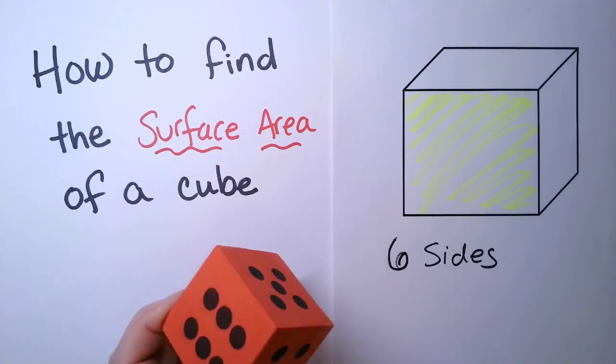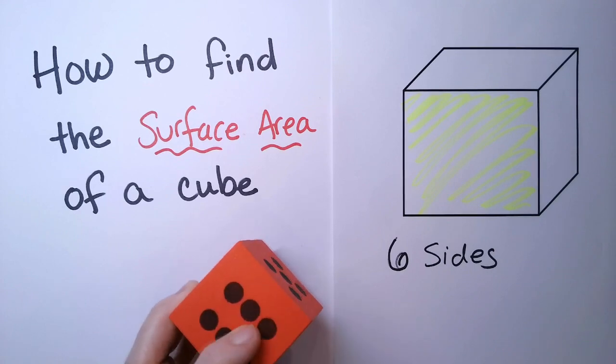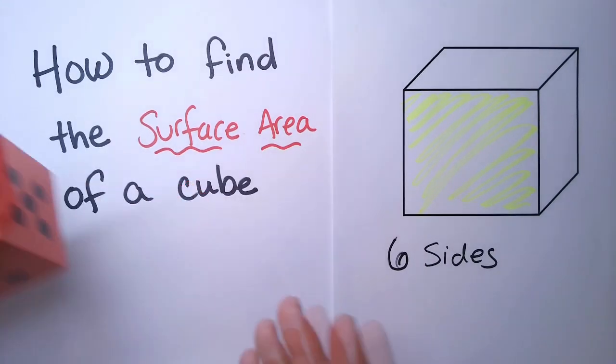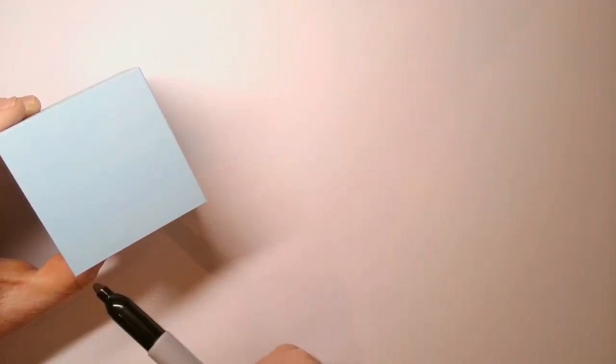So, by the way, if you're new to surface area, all it is is the measure of how much space is needed to cover the outside of a three-dimensional shape. And for a cube, we're in luck because all six sides are the same. So let's take a look at just one of the faces.